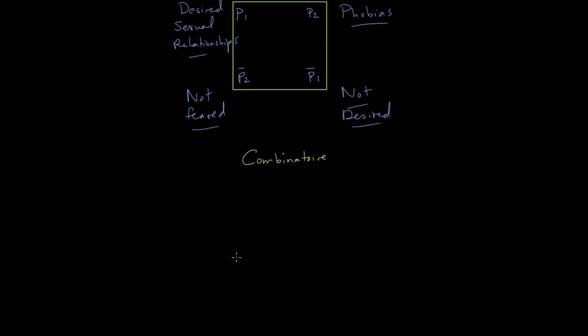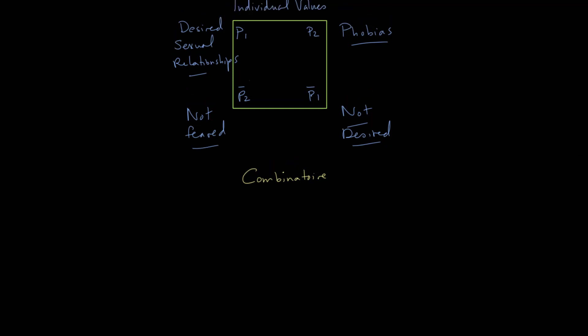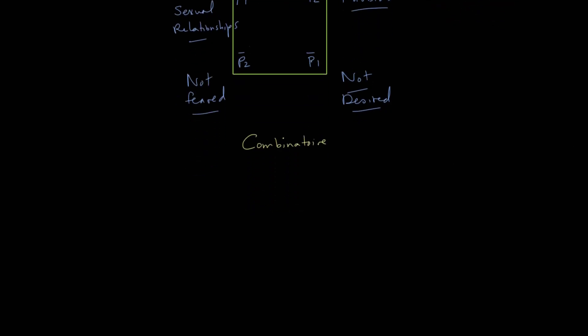Of course, the truth is that not every society allows for every combination. Many societies will say certain combinations are impossible — you're just not going to see them. So as we start to relate the squares to each other as analysts, we have to think of different types of connections and combinations.